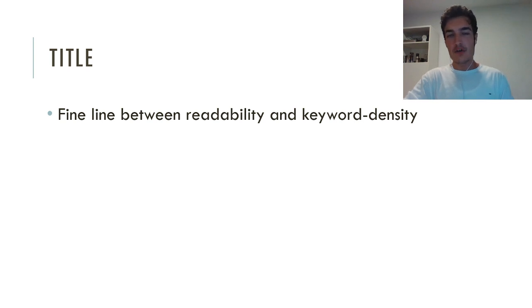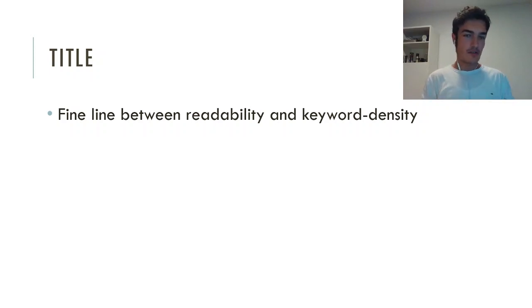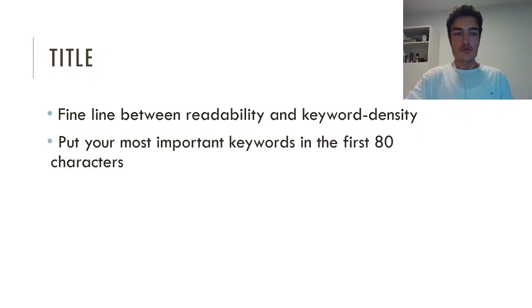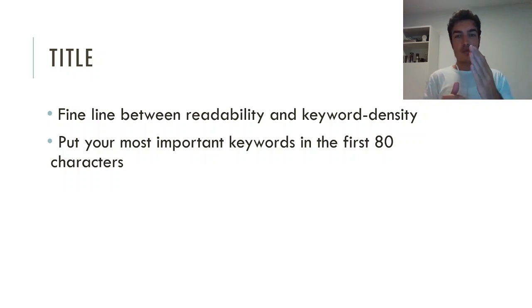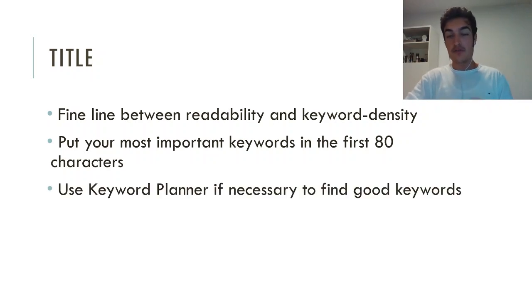Then we have the title. There is a fine line between readability and keyword density. Titles that are very short and easy to read — like 'anti-theft backpack gray' — are readable, but they don't have many powerful keywords. What you should do is put your most important keywords in the first 80 characters, because that's what people see on mobile — after that it will be trimmed. So make sure your most important keywords are at the very beginning, also the most important for the customer to actually see. Use the keyword planner if necessary to find keywords with good search volume and good CPCs.